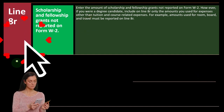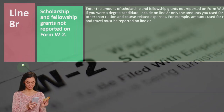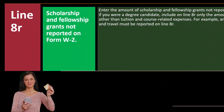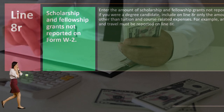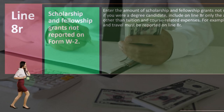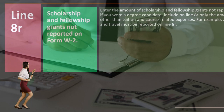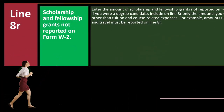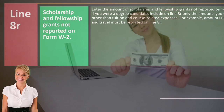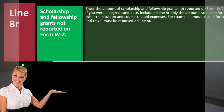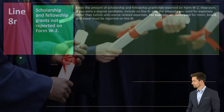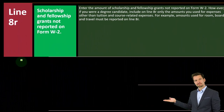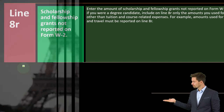Line 8R — scholarship and fellowship grants not reported on Form W-2. This is an issue regarding money people receive for higher education. If the money came through an employer, they would report it on the W-2. If you got scholarship money not reported on the W-2, the question is whether you have to include it as income. Enter the amount of scholarship and fellowship grants not reported on Form W-2; however, if you were a degree candidate, include on line 8R only amounts used for expenses other than tuition and course-related expenses. For example, amounts used for room, board, and travel must be reported on line 8R.